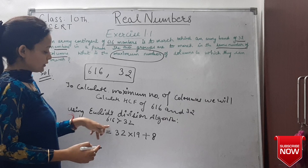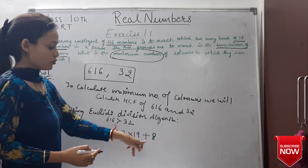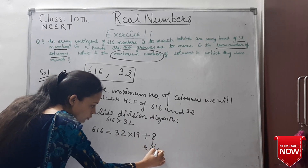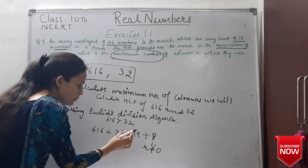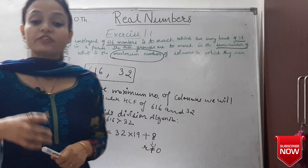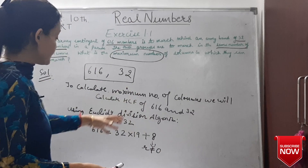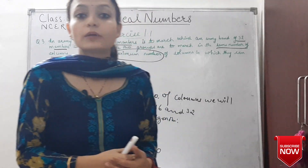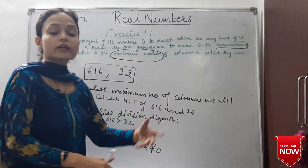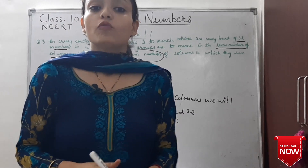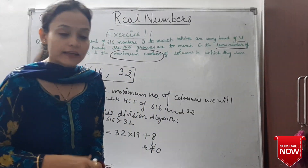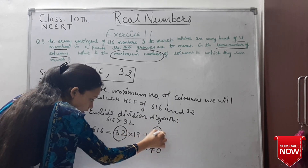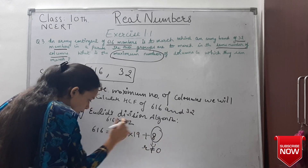So applying Euclid's division algorithm: 606 divided by 32 gives quotient 19 and remainder 8. Since the remainder is not equal to 0, we continue. Now our next step uses the values 32 and 8. As we studied in the previous video on Euclid's division algorithm — if you don't know, please see the previous video linked in the description.